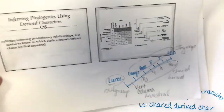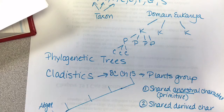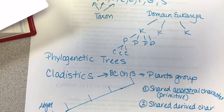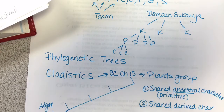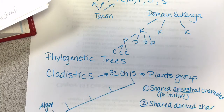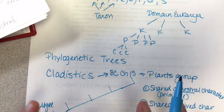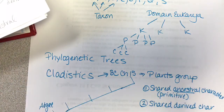We also looked at the trees and the different branch lengths and what they can mean — sometimes it represents time, sometimes it doesn't. But this chapter is all about interpreting these trees and cladograms and figuring out the relationships of organisms.